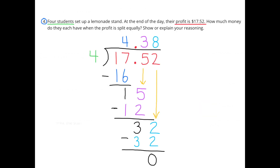Number 4: 4 students set up a lemonade stand. At the end of the day, their profit is $17.52. How much money do they each have when the profit is split equally? The profit was $17.52 divided by 4 people. 4 goes into 17 four times, so we put a 4 above the 7 in the ones place. 4 times 4 is 16, and the difference is 1. We put the decimal in and bring down the 5. 4 goes into 15 three times; 3 times 4 is 12, difference is 3. Bring down the 2; 4 goes into 32 eight times; 8 times 4 is 32, difference is 0. Each person's share of the profit was $4.38.